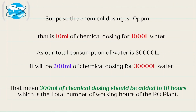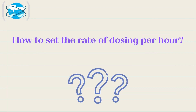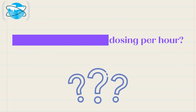Suppose the chemical dosing is 10 ppm, that is 10 milliliters of chemical dosing for 1,000 liters water. As our total consumption of water is 30,000 liters, it will be 300 milliliters of chemical dosing for 30,000 liters water. That means 300 milliliters of chemical dosing should be added in 10 hours, which is the total number of working hours of the RO plant.